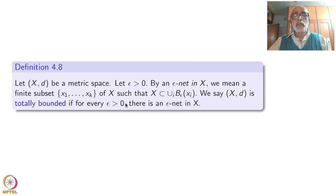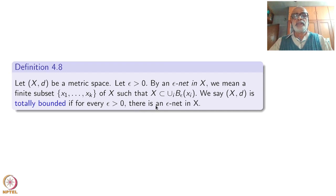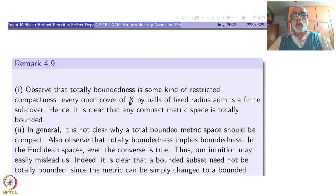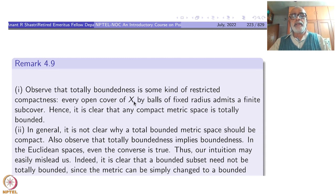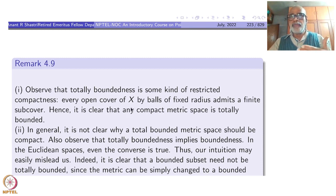Obviously this is much stronger: if you take epsilon balls that admit a finite sub-cover, that is what it means. This is almost compactness — total boundedness is some kind of restricted compactness. Every open cover of X by balls of a fixed radius admits a finite sub-cover. It is clear that any compact metric space is totally bounded, because balls of fixed positive radius will allow a finite sub-cover since it is compact.